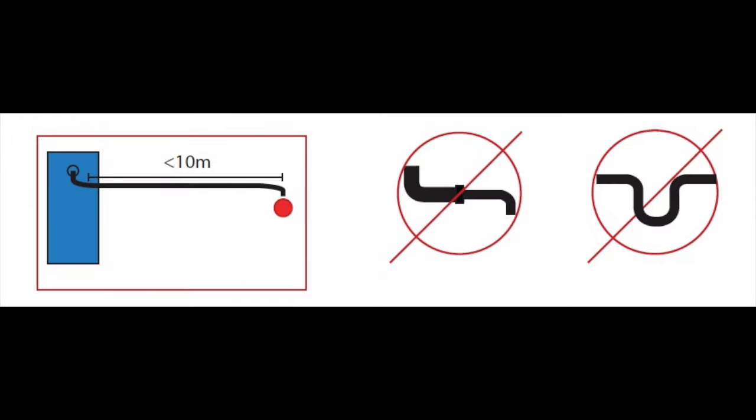The steam pipe must not go down and then up as this will create a trap which will block the steam from getting through.